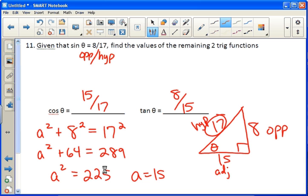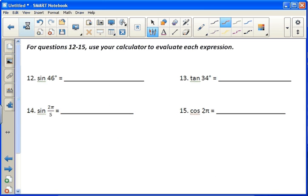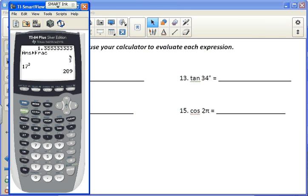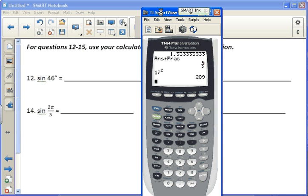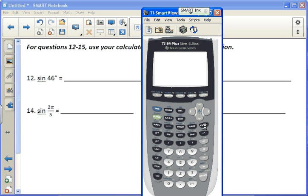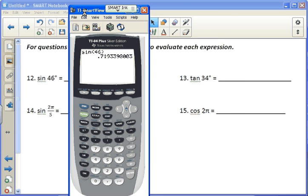Number 12, we just use the calculator. Make sure that on 12 and 13 we're going to be in degree mode. I'm not going to write these down, I'll just put it in the calculator. Sine of 46 degrees gives us, oh, see I don't think I'm in the right mode. Oh, I am. Good. Okay. So sine of 46 degrees is .719. Tangent of 34 degrees is .674.